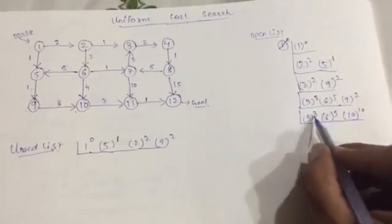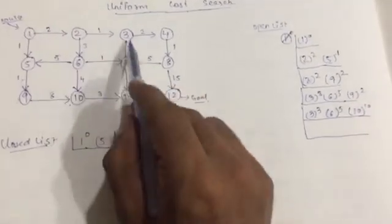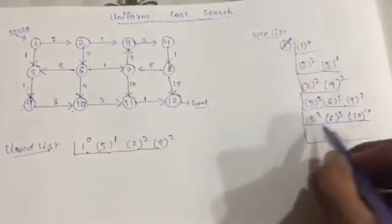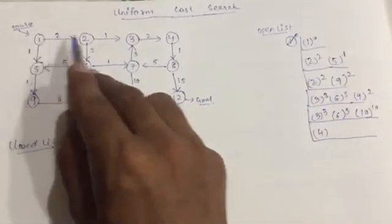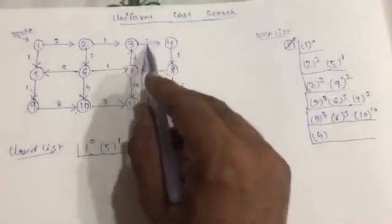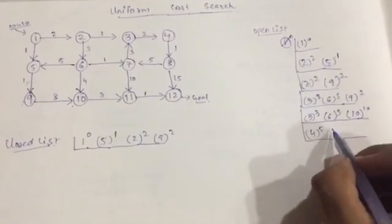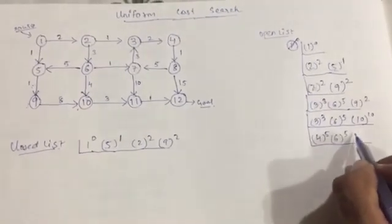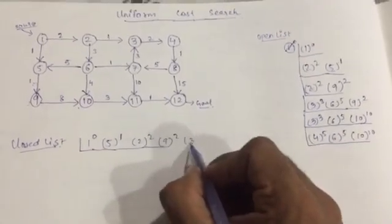Now which one is minimum from 3, 5, and 10? It's 3. From node 3 you can go to node 4 only, so node 4 equals 2 plus 1 plus 2, meaning 3 plus 2 equals 5. The open list now has 6, 5, 10, 10. Include node 3 in the closed list.